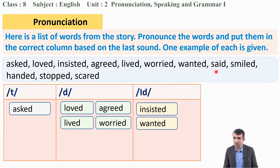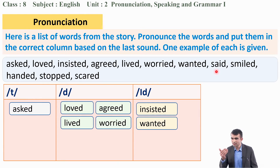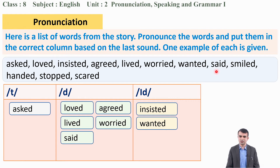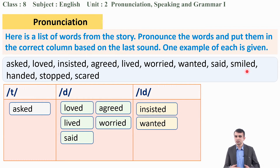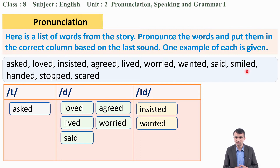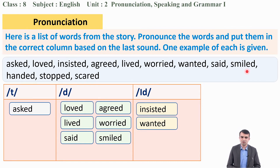Next, 'said' — what is the last pronunciation? That is /d/, so it should come under /d/. Next, 'smiled' — try it: smiled. Is it /d/ or /t/? It is /d/, so it should come under /d/. Next, 'handed' — handed. You should write this word under the /id/ column.